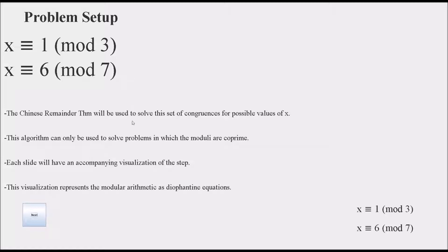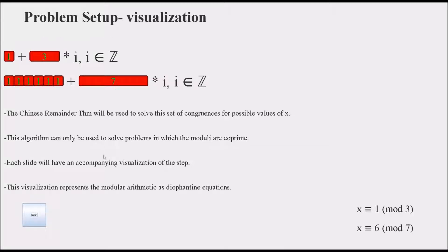So here is a visualization of the initial conditions. You can see that the first one, x is congruent to 1 mod 3, is represented as 1 plus any number i times 3, where we don't know i, and it's also congruent to 6 plus any number i times 7. The visual representation displays these two congruencies as diophantine equations. It restricts the moduli with an unknown integer and then adds the residual line.